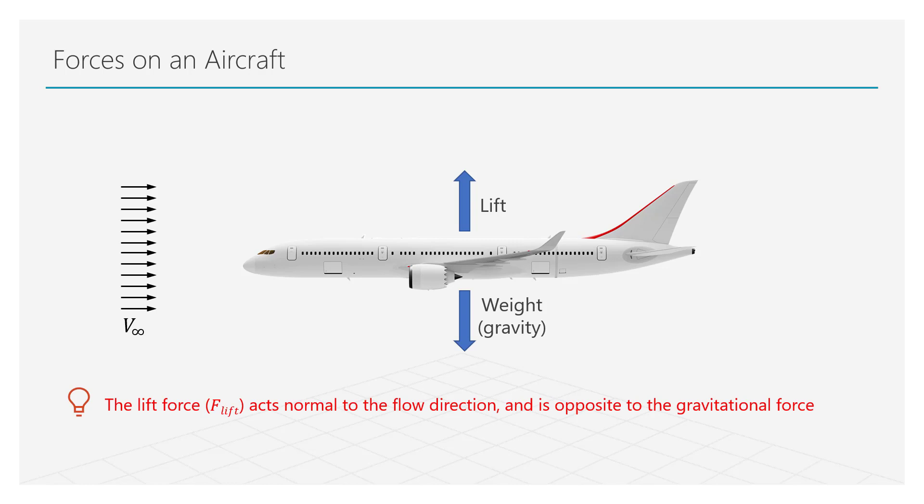Drag force, on the other hand, is the force that tries to impede the motion of the aircraft. It acts in the direction of the air flow. The thrust force generated by the engines acts to overcome this drag force so that the aircraft can move forward.